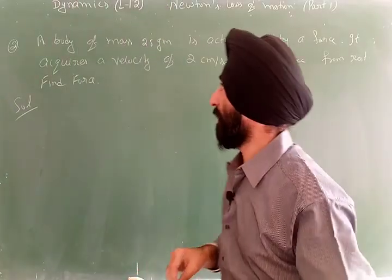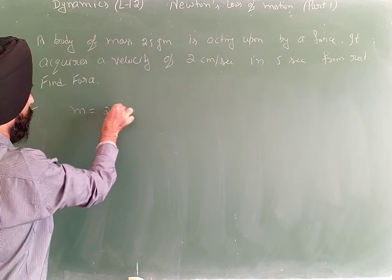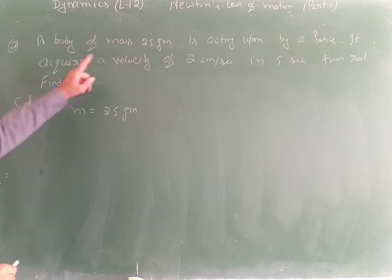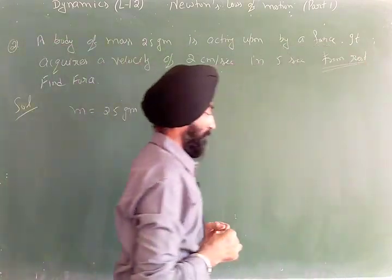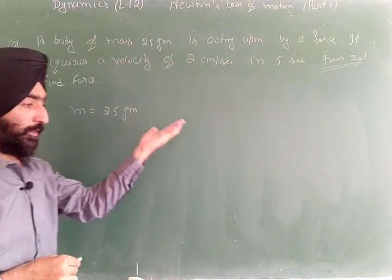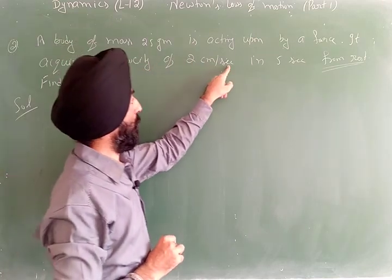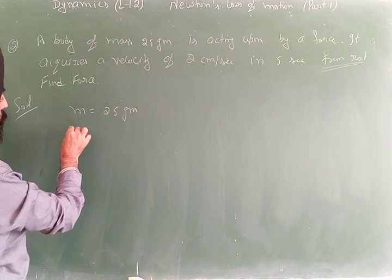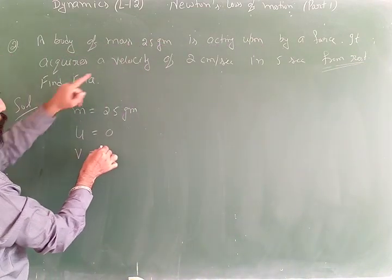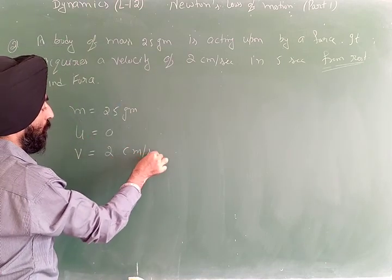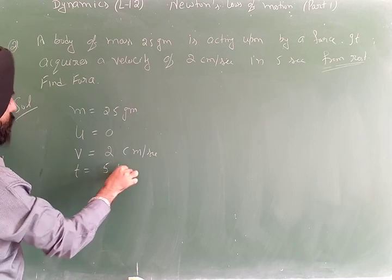Second question: A body of mass 25 grams is acted upon by a force. It acquires a velocity of 2 cm per second in 5 seconds starting from rest. So u = 0, v = 2 cm/s, t = 5 seconds. Find the force.